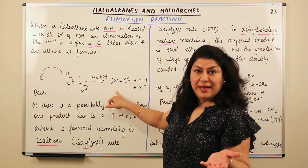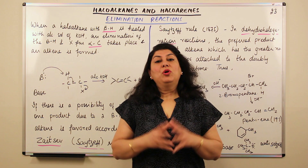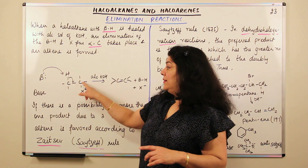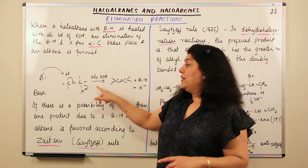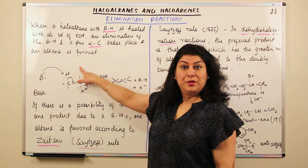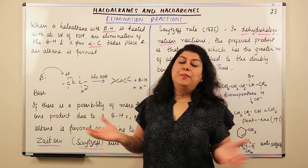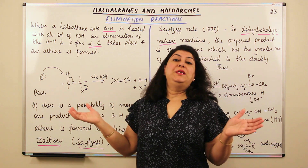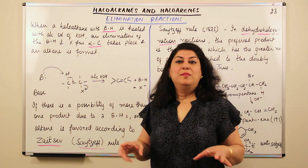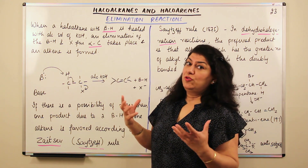If it is chlorine, it leaves as chloride. Now, it's important to understand that in a chain, the alpha carbon may not have just one beta carbon — the chain could extend in both directions, so there could be two or more beta carbons, each with beta hydrogens. So whenever a compound has more than one beta carbon or beta hydrogen, there is a chance that any of those beta carbons could lose the hydrogen. What decides which beta hydrogen will be lost?